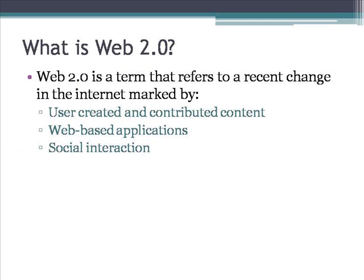So what is Web 2.0? It's hard to get a precise definition, but it's a term that refers to recent changes in the Internet, marked by three main things: first, the contribution of user-created media and content to the Internet; second, applications that are available online within web browsers; and finally, social interaction taking place on the Internet.